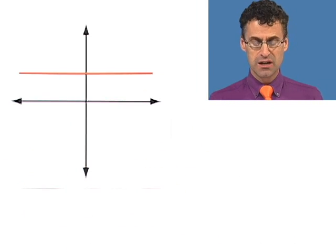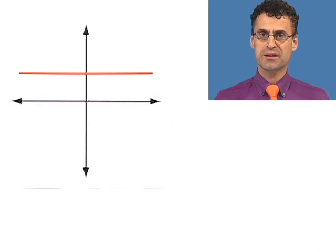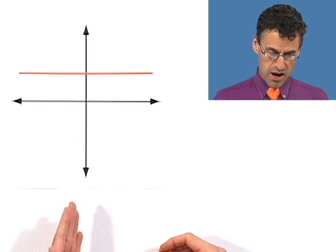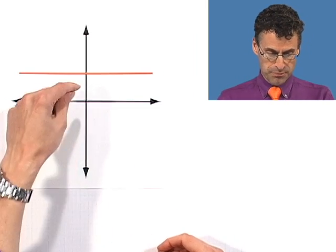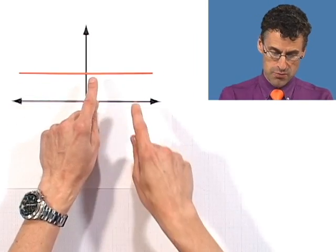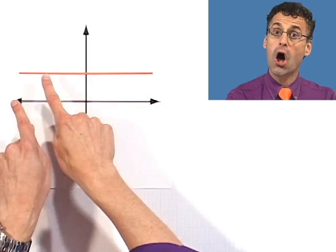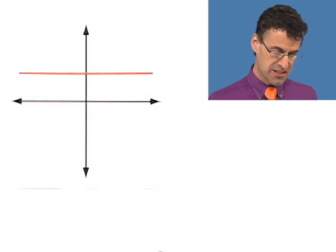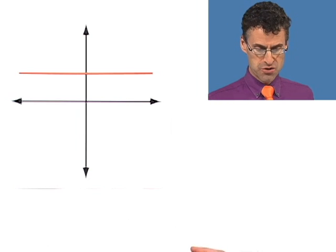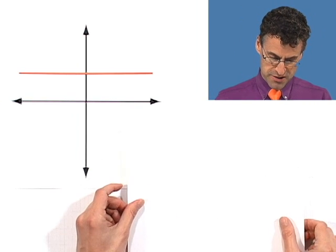And actually we can actually compute the slope of this kind of line because, of course, the change in y over the change in x, well, there's no change in y, right? The y values don't change at all. So, in fact, this has slope zero, right? Change in y over change in x, the slope is zero.